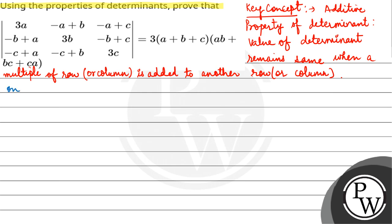Here our left hand side operation is C1 is replaced by C1 plus C2 plus C3. So it would be A plus B plus C, and A plus B plus C, and this is also A plus B plus C. And C2 will remain same, and C3 will remain same.